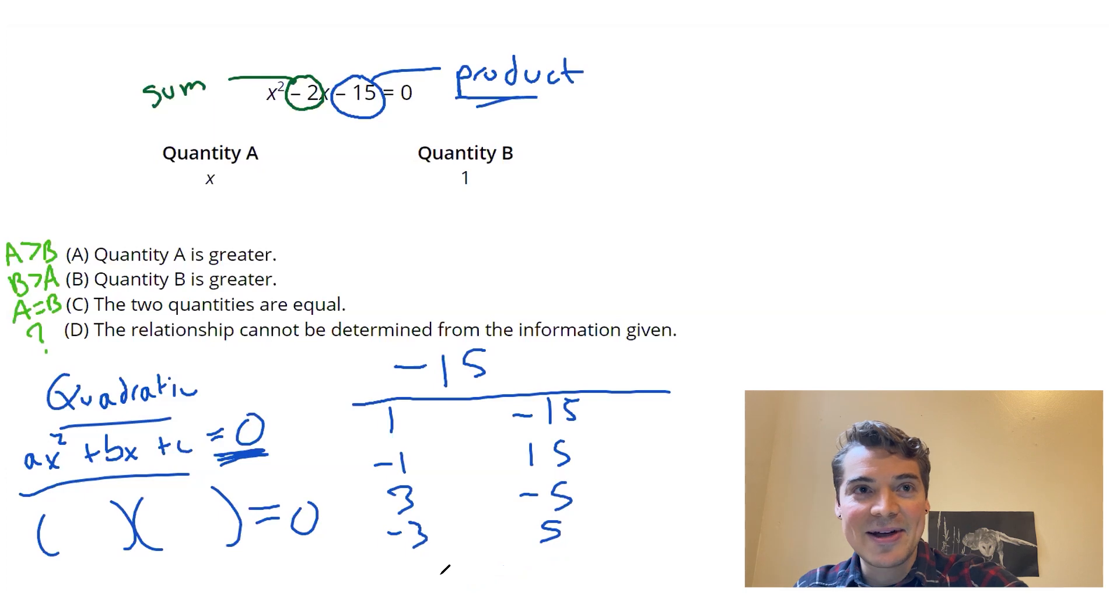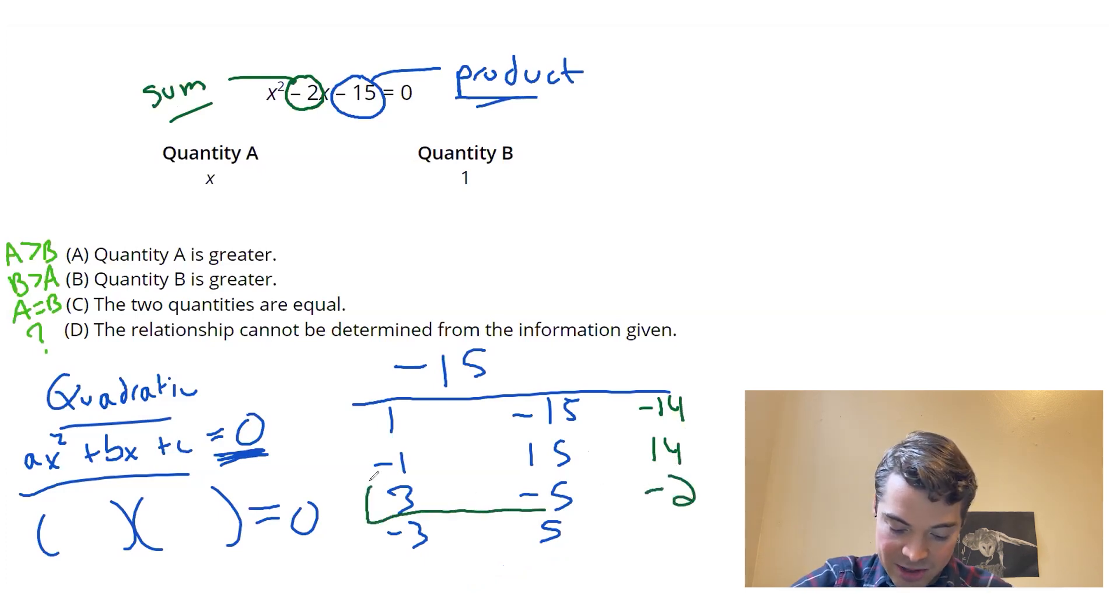So now I got to look at my pairs and see which one gives me a sum of negative two. So one plus negative 15, that's going to be negative 14. That's going to give me a sum of positive 14, three plus negative five. Aha, that is the one I'm looking for. That gives me my sum of negative two.